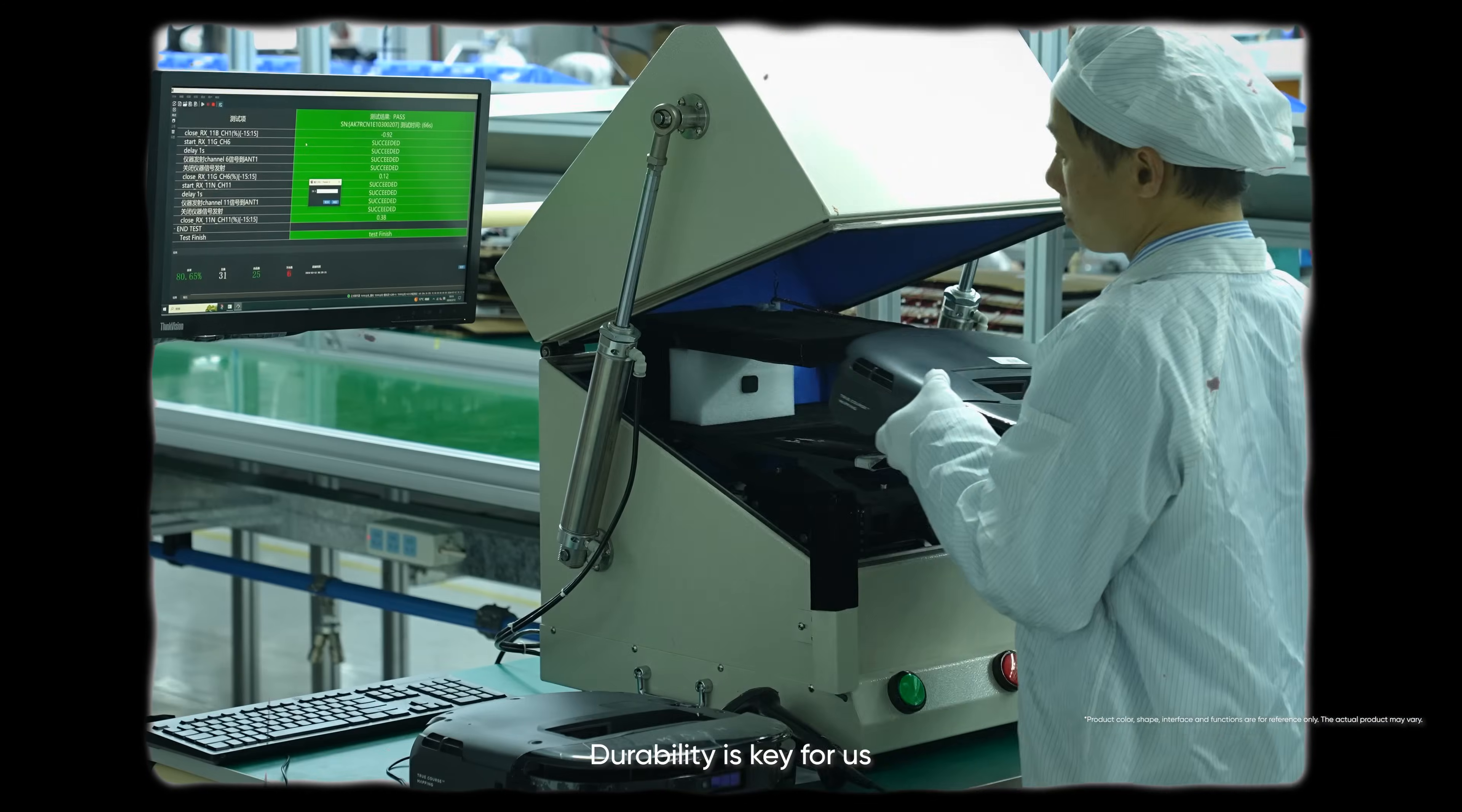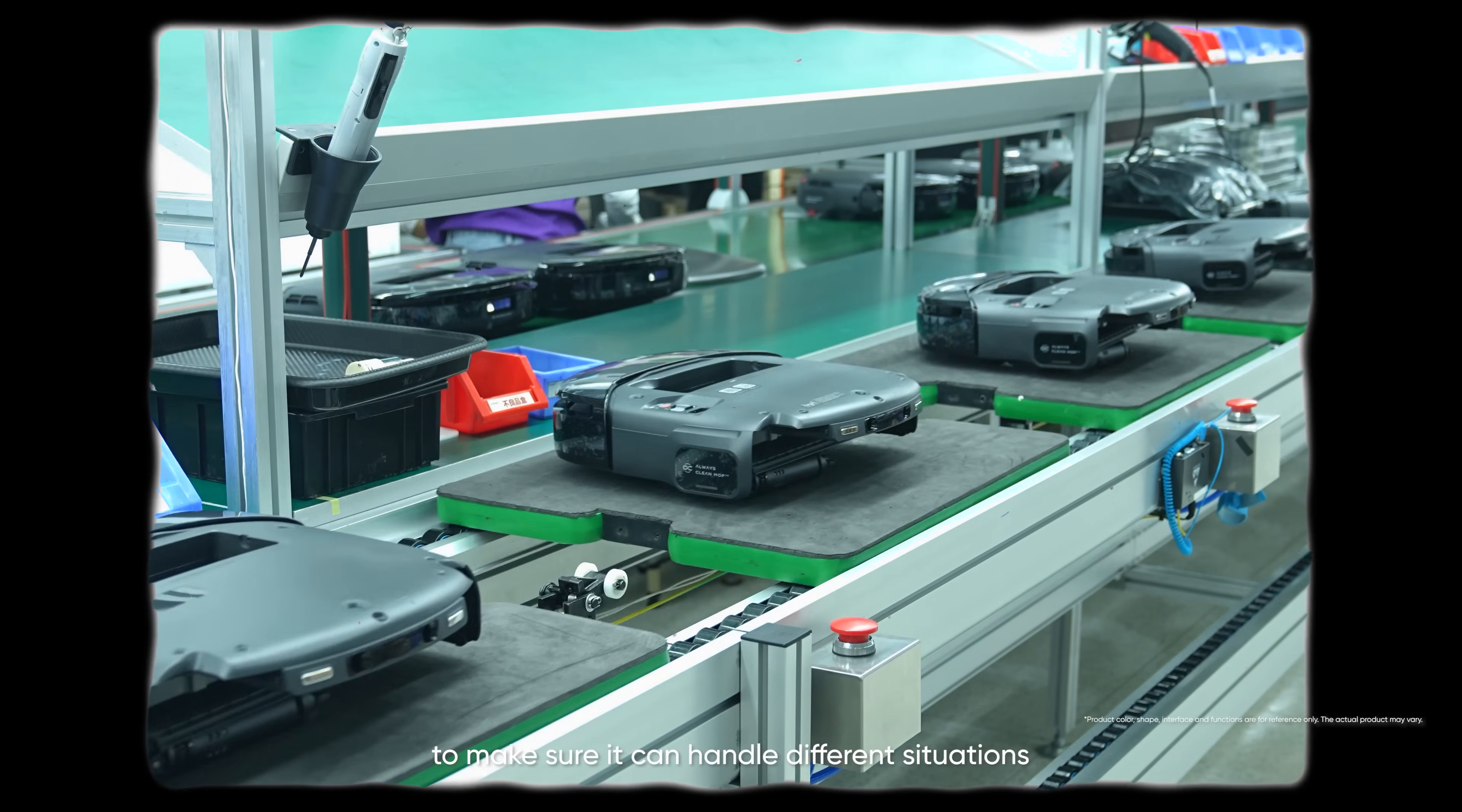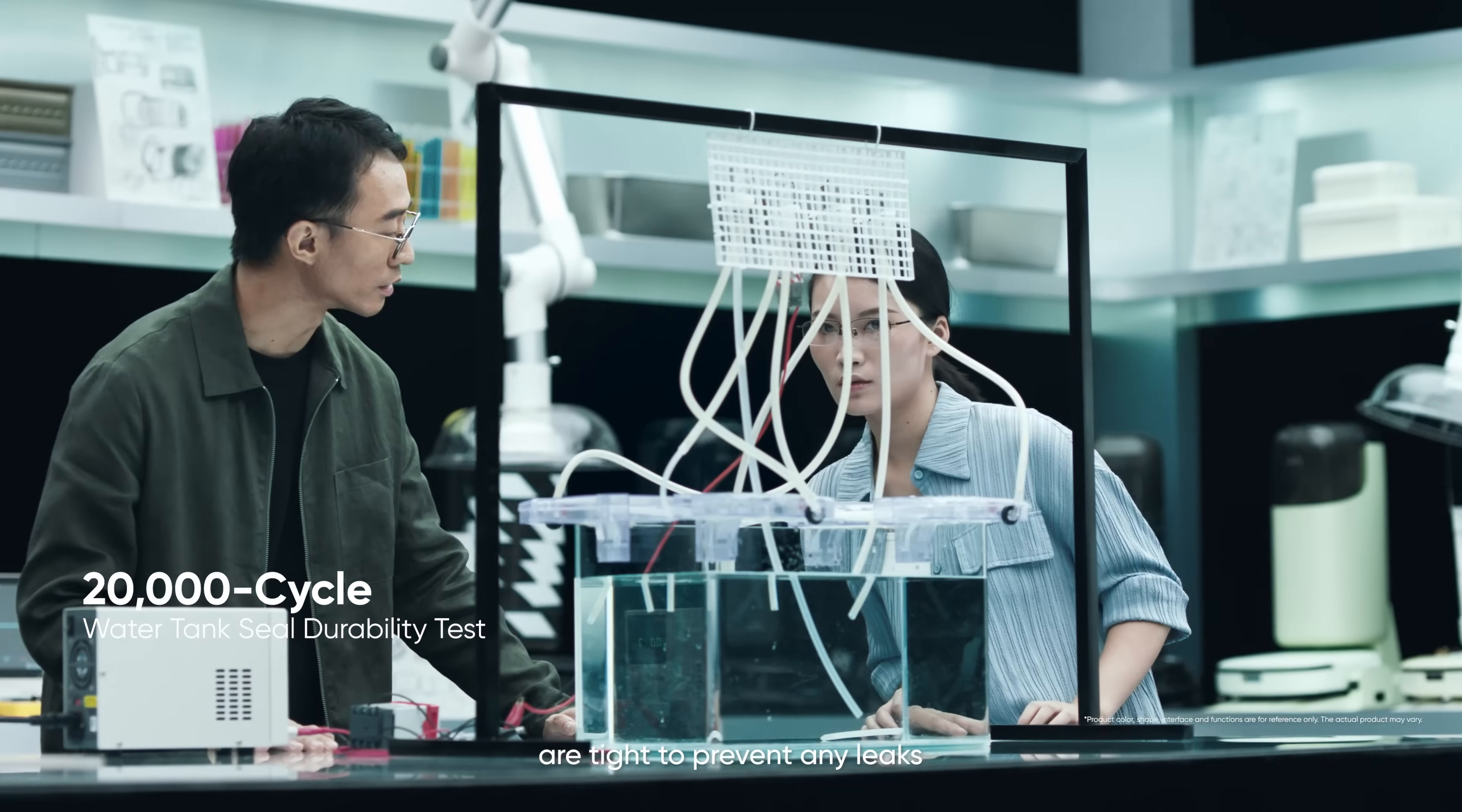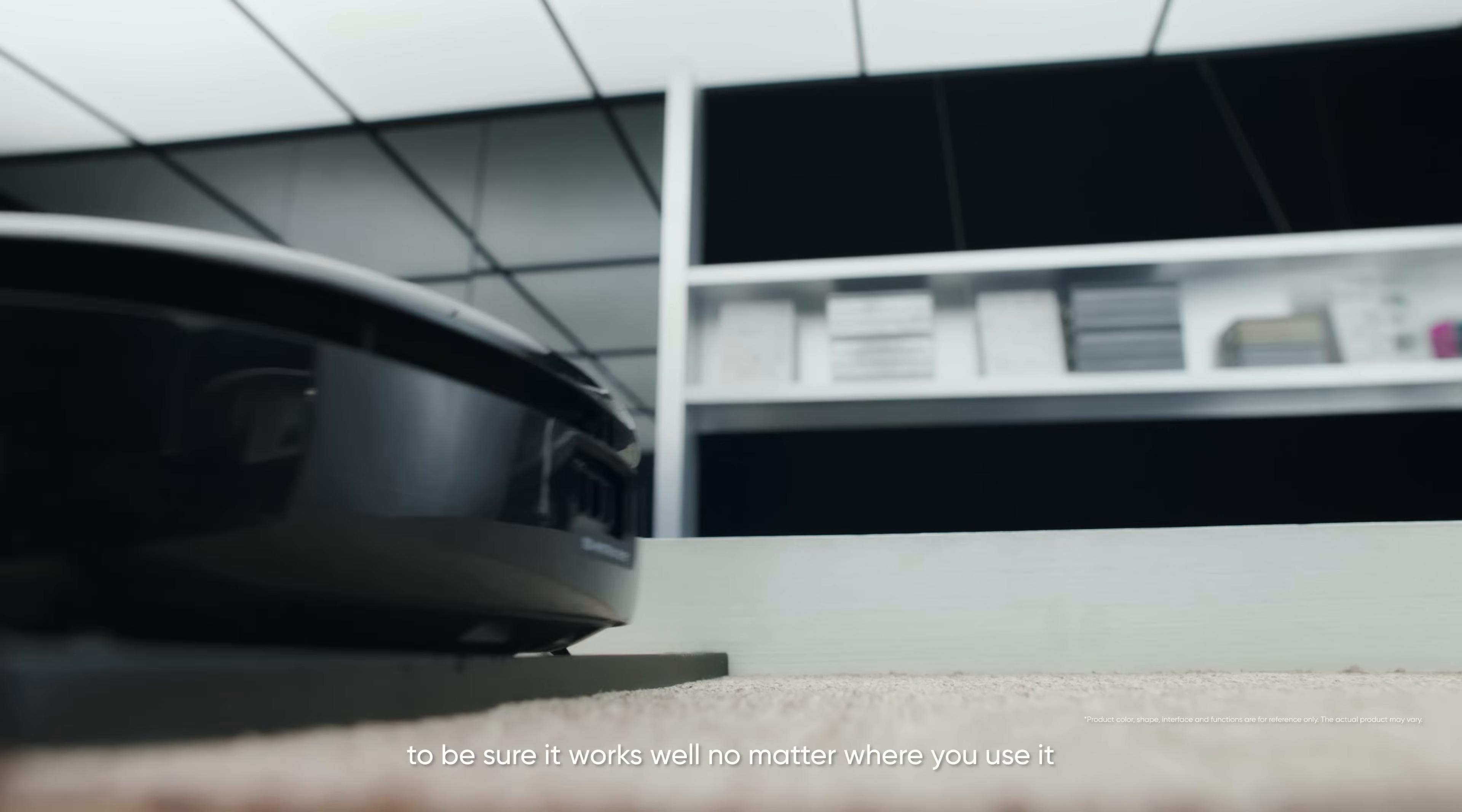Durability is key for us. We've put this vacuum through all sorts of tests to make sure it can handle different situations. For example, we've made sure the water tank seals are tight to prevent any leaks. We've also checked it out on different floors and carpets to be sure it works well no matter where you use it.